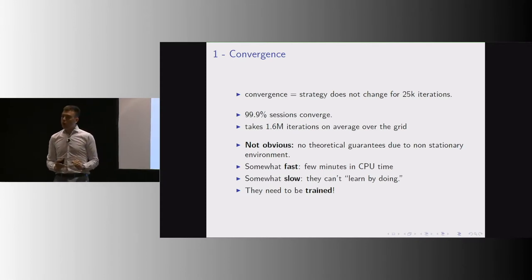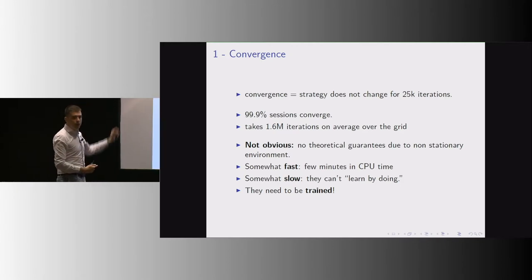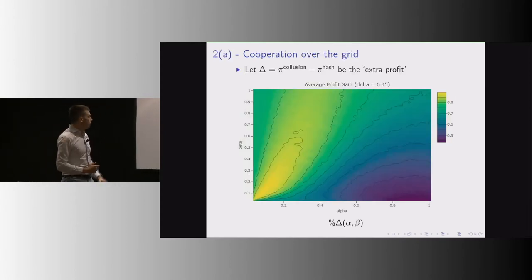It's somewhat slow in the sense that you cannot put this in production. If you want to use the Amazon API to deploy these algorithms to price your goods, that's going to be very expensive. You will have to train them with data off policy, but companies that are offering repricing services have plenty of data to use to train these algorithms.